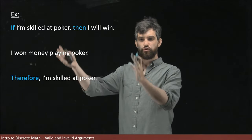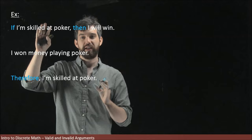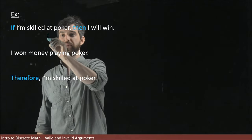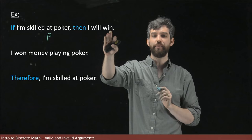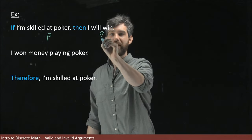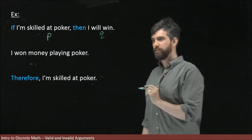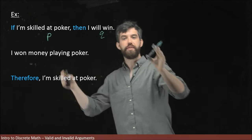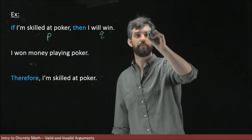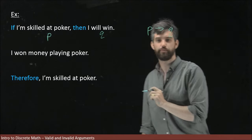Let's try to analyze the structure of this argument. First, if I'm skilled at poker, I'm going to give that a P. Then, I will win money, I'm going to give that as Q. So that was my first premise: if P, then Q. I'll write this as P implies Q - that is my first premise.